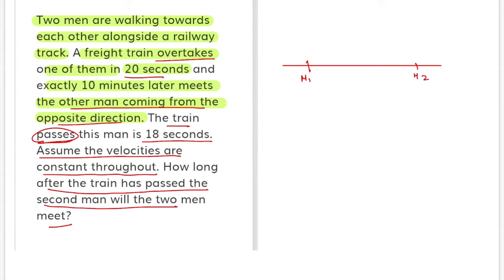Man one and man two. The train takes 20 seconds and 18 seconds to pass both the men, overtake and meet and cross. We can work on the length of train. The better one is to take the LCM: 360 meters is the length of train.